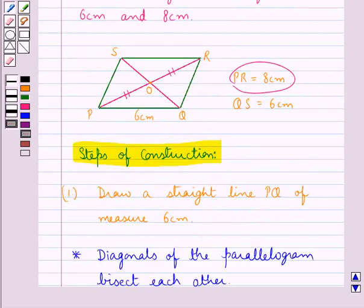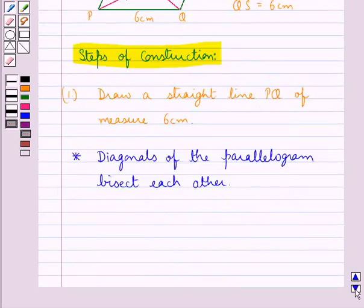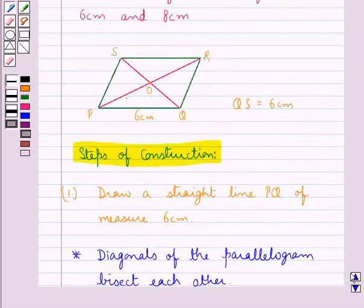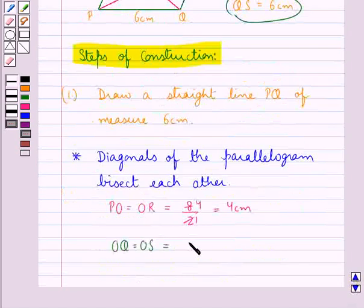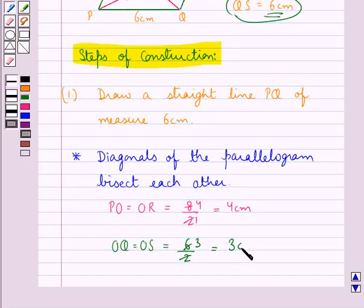In the same way, since QS is of measure 6 cm, OQ and OS would be equal and each would be equal to 6 divided by 2, so OQ and OS each come out to be equal to 3 cm.